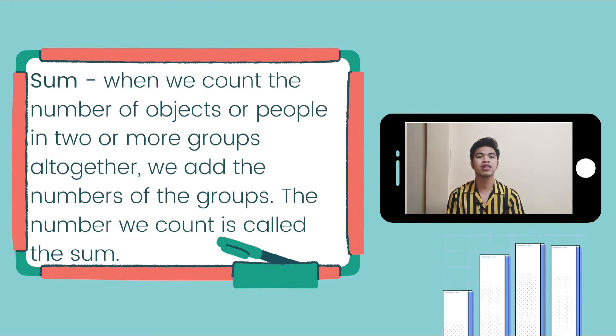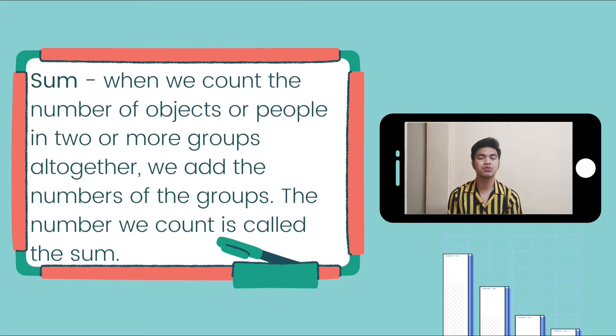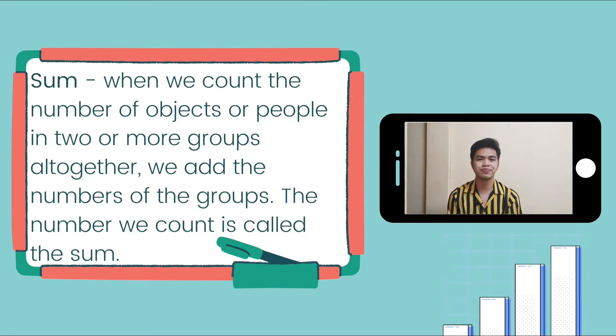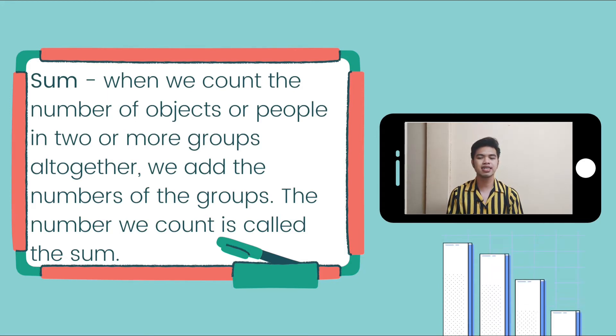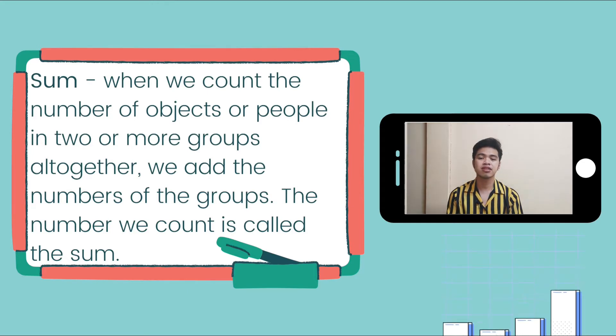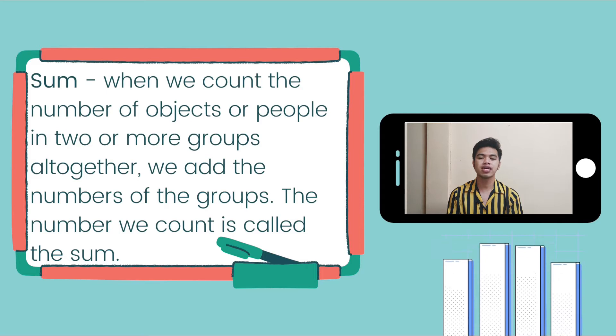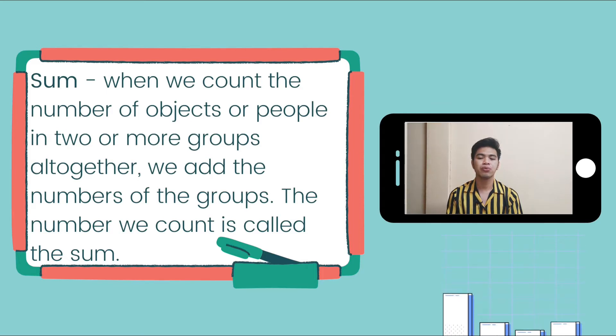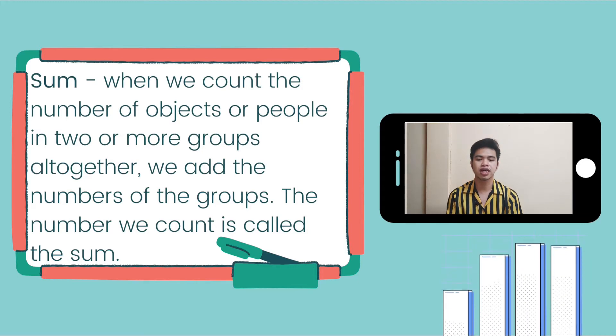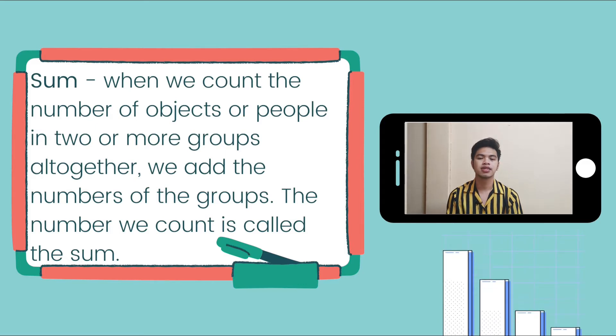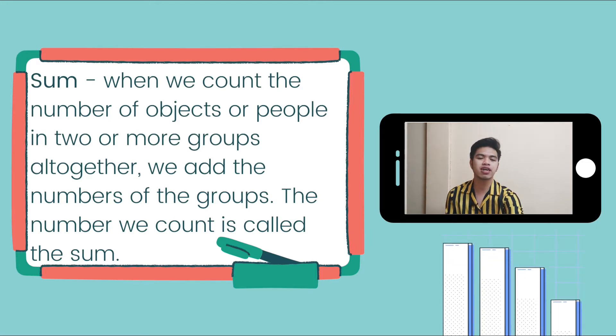Now, we're going to have our vocabularies or the words that we are going to face for today. These words are related to addition. The first word is sum. When we count the number of objects or people in two or more groups all together, we add the number of groups. The number that we count is called the sum. Sum is the total of the addition equation. It is the answer in addition.